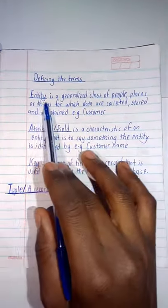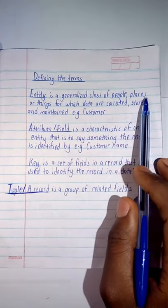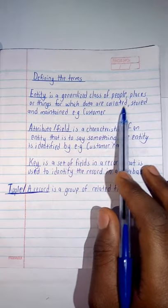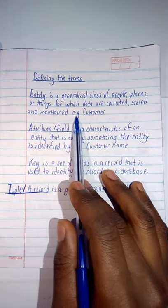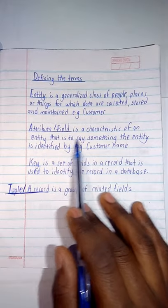Moving on, defining some of the terms: What is entity? Entity is a generalized class of people, places, or things for which data are collected, stored, and maintained - for example, a customer.